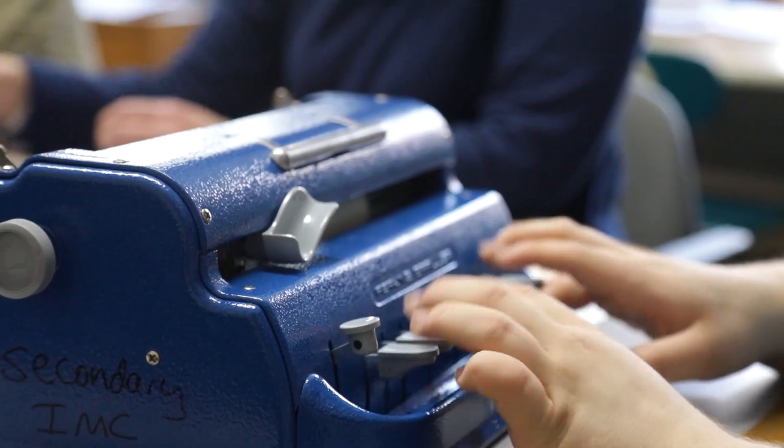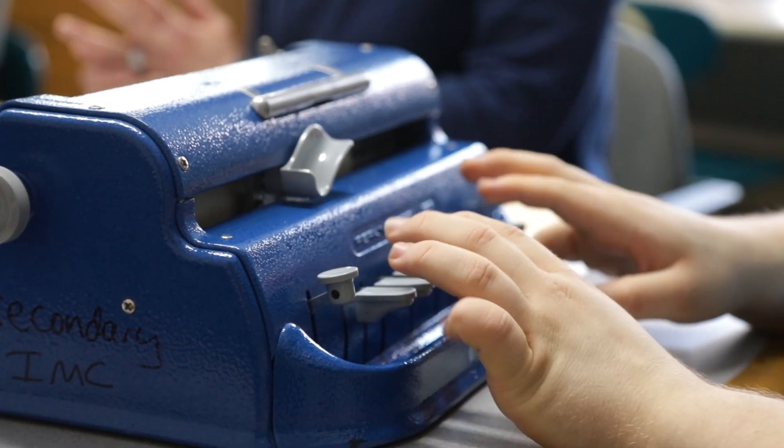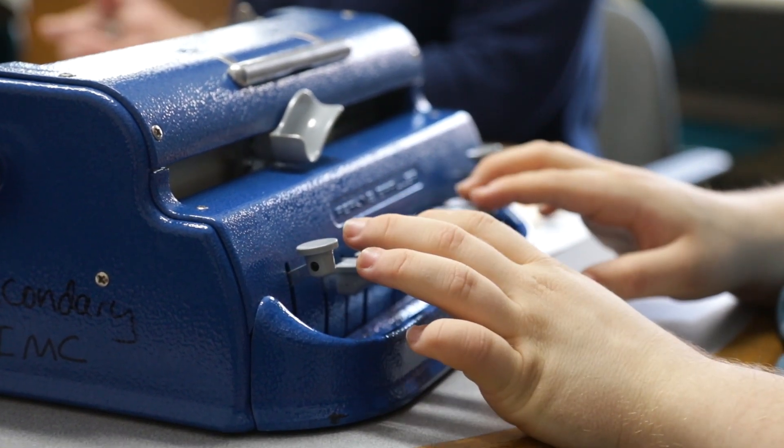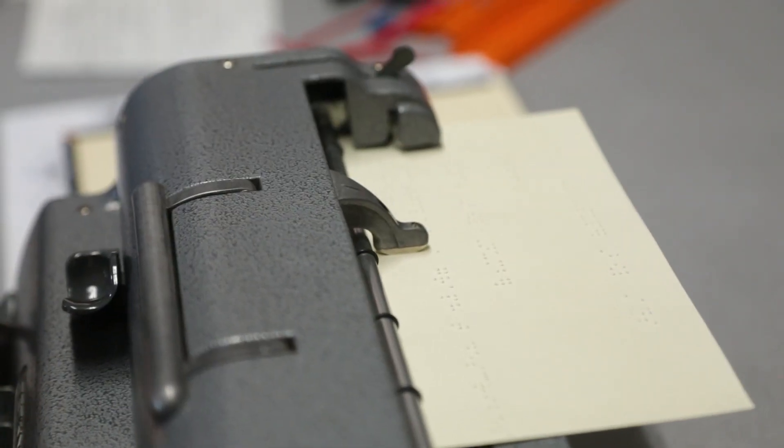Students without vision often use a manual Perkins Brailler, and they are essentially typing out their math line by line, and it's fascinating to watch.